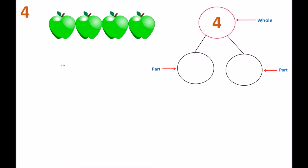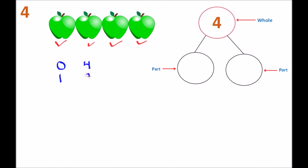Welcome everyone, it's Miss Judy — we're on the fours. So now we have four apples, so we know we can start with a zero and a number four. We add that to the number bond: on the left side we put a zero and on the right side we put the number four. Let's go back to our apples and I'm going to put a check mark by the first apple. So there's one apple and then we now have three apples remaining, so we write down a one on the left side and the number three on the right side of our number bond.